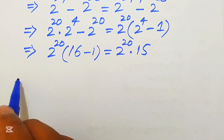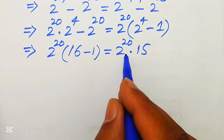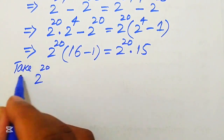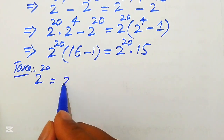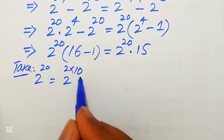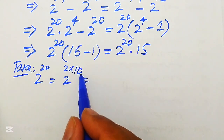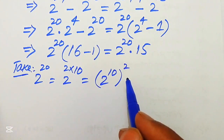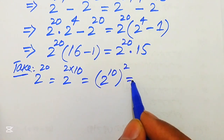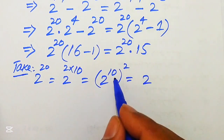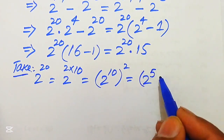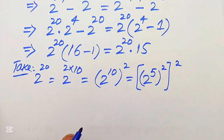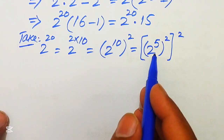To find 2 to the power of 20, we write the exponent 20 as 2 times 10, then apply the exponent law to get (2 to the power of 10) whole squared. We break this further by writing 10 as 2 times 5, giving us (2 to the power of 5) squared, whole squared.